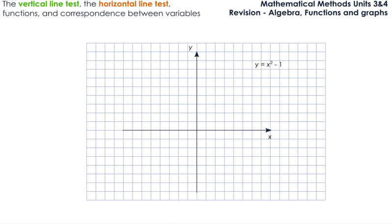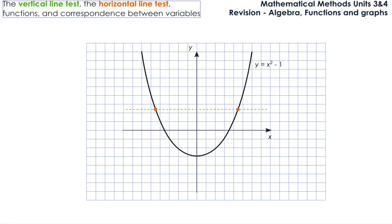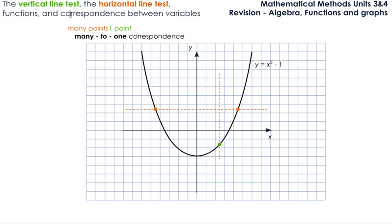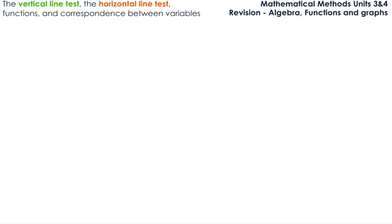The next one we are going to look at is a parabola — y equals x squared minus one. If we start with the horizontal line test, we notice that the horizontal line crosses the graph in two points. As soon as we are talking about more than one point, we say many points. Then we do the vertical line test. It doesn't matter where we draw the vertical line — it is going to cross the graph in one point only. So we have many points on the horizontal and one point on the vertical. This gives us a many-to-one correspondence between the two variables.